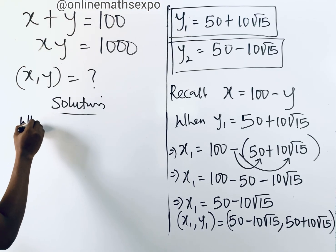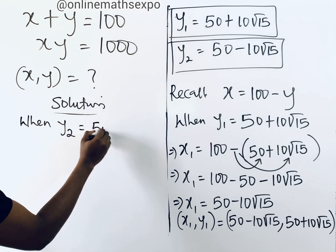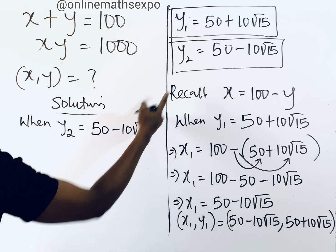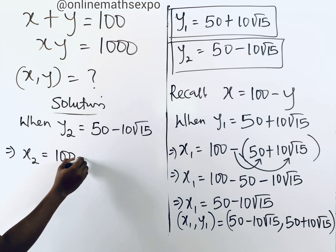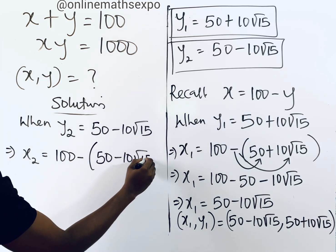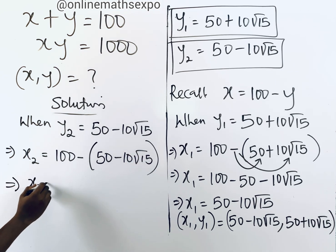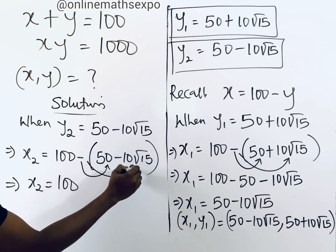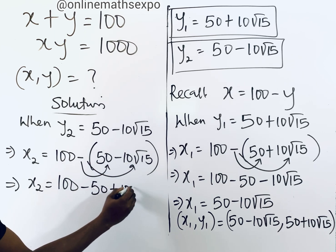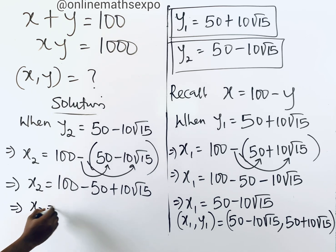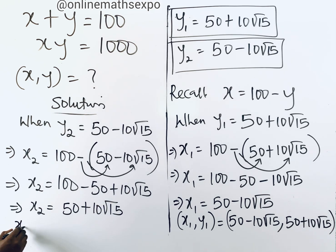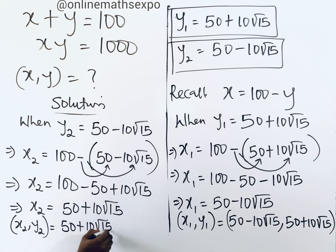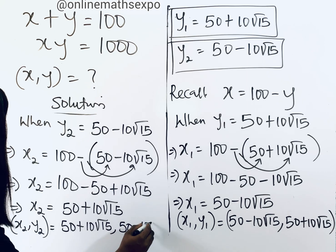For the second value, y equals 50 minus 10 root 15: x₂ equals 100 minus (50 minus 10 root 15). Distributing gives 100 minus 50 plus 10 root 15, which equals 50 plus 10 root 15. So the second solution set is x equals 50 plus 10 root 15 and y equals 50 minus 10 root 15.